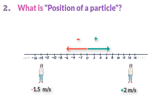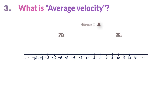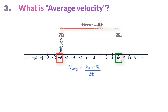How do you find the average velocity? If a particle has moved from position x_i to x_final in time delta t, then the average velocity is: v_average equals x_final minus x_initial divided by delta t. So if Minnie moved from plus 10 meters to minus 8 meters in 6 seconds, her average velocity is v_average equals minus 18 divided by 6, which equals minus 3 meters per second.